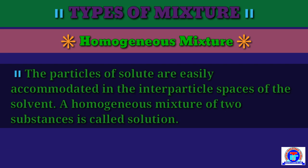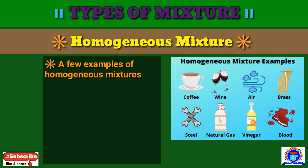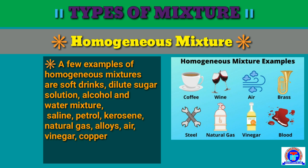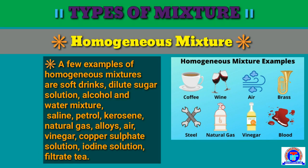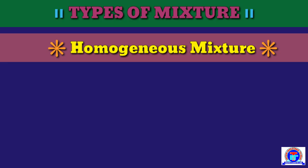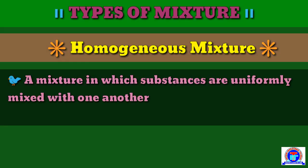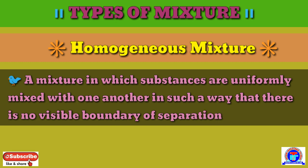A homogeneous mixture of two substances is called a solution. A few examples of homogeneous mixtures are soft drink, dilute sugar solution, alcohol and water mixture, saline, petrol, kerosene, natural gas, alloy, air, vinegar, copper sulfate solution, iodine solution and filtered drink. A mixture in which substances are uniformly mixed with one another in such a way that there is no visible boundary of separation is called a homogeneous mixture.